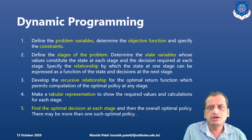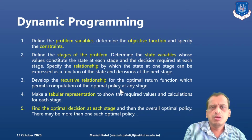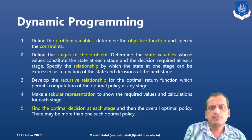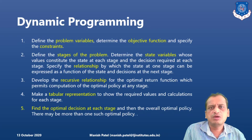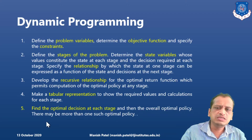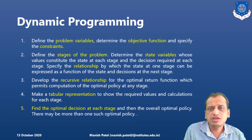In the third step, we define the recursive relationship, which is used for the optimal return function — it permits computation of the optimal policy at any stage. For example, based on the n+1 optimal policy, we go recursively to get the optimal policy of stage n. We then make a tabular representation to calculate the optimum decision at every stage. The overall optimal policy of the whole problem is defined by the optimal policy at each stage, and you can get more than one optimal policy.